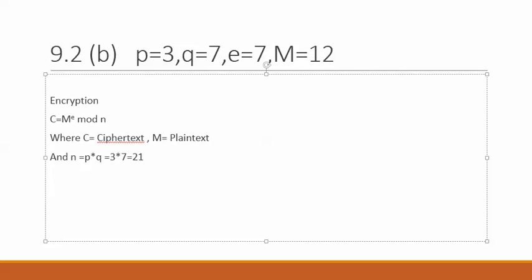Which is C = M^e mod n. So we have M=12, e=7, and mod n is 21. I'm going to break this 12 to the power 7 into separate components.